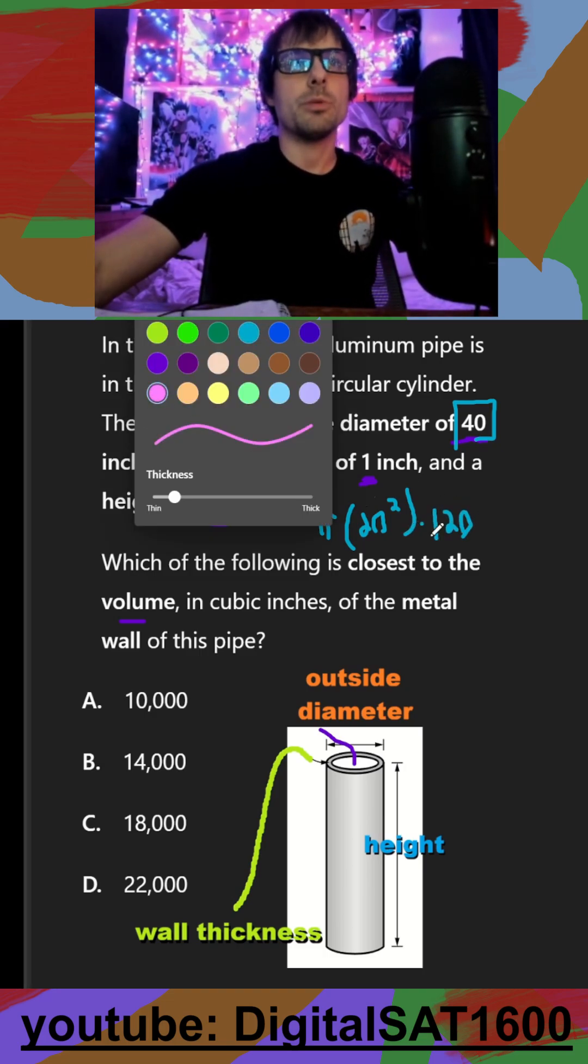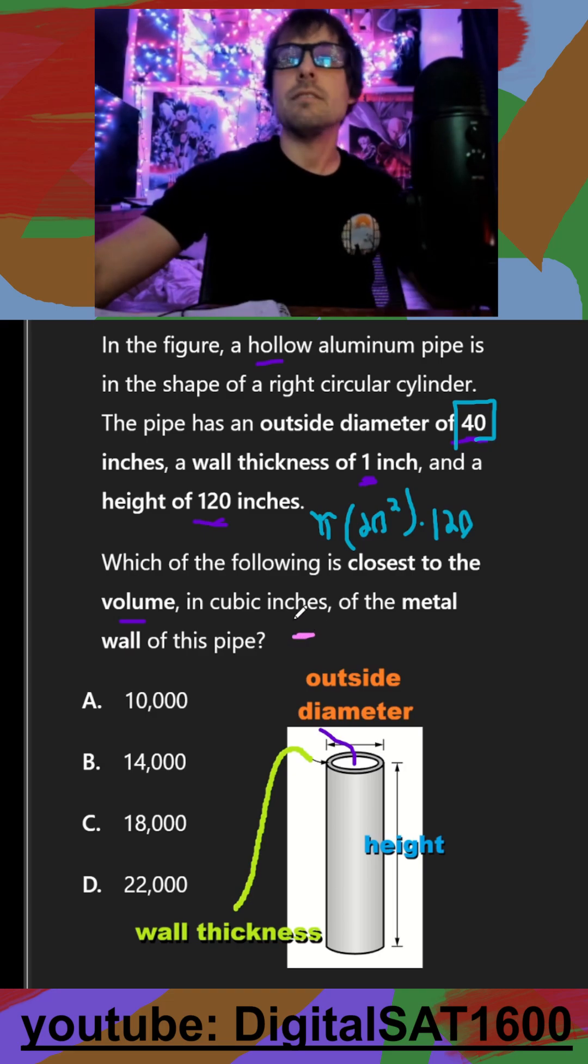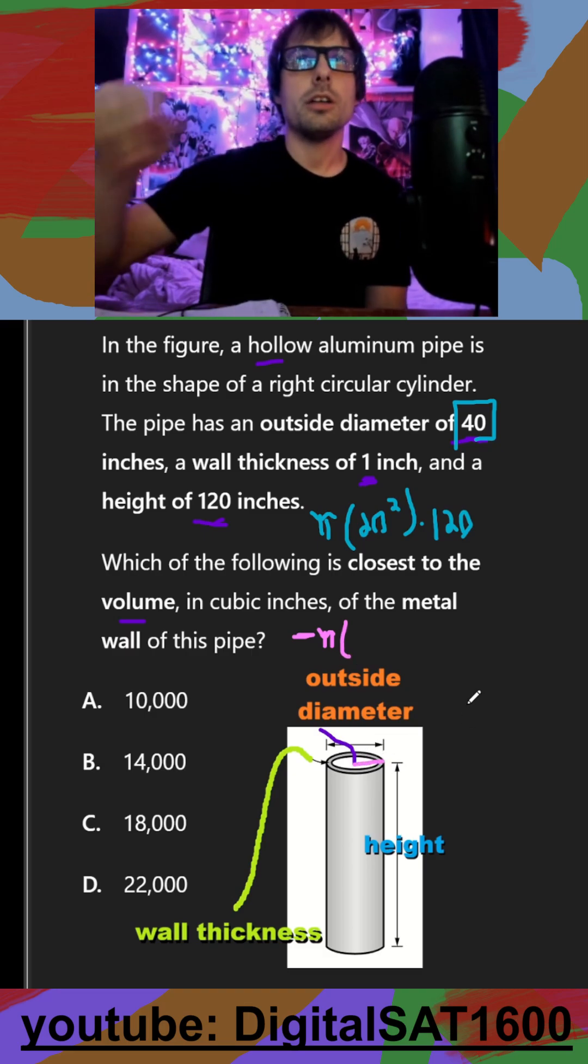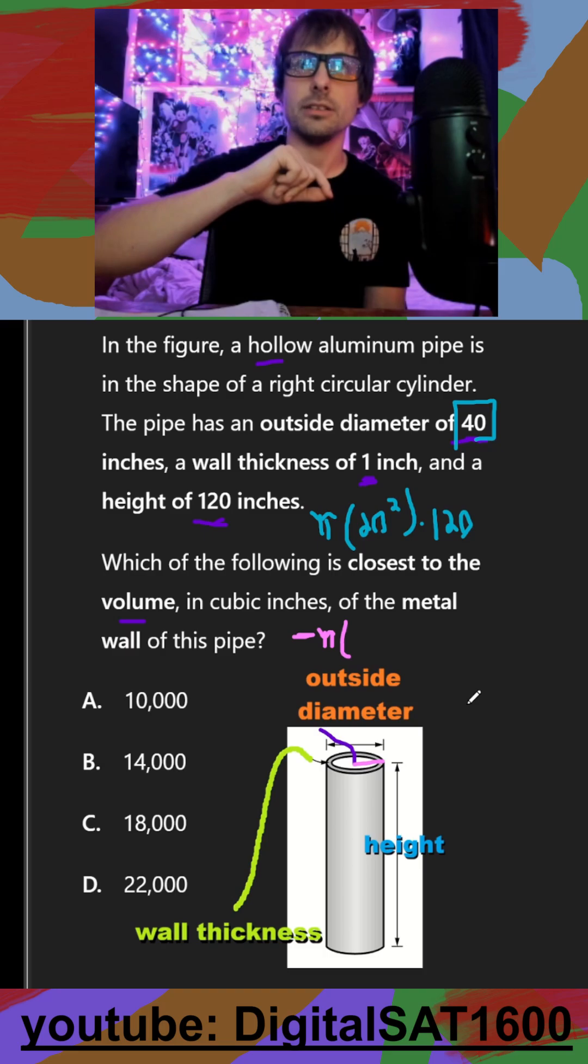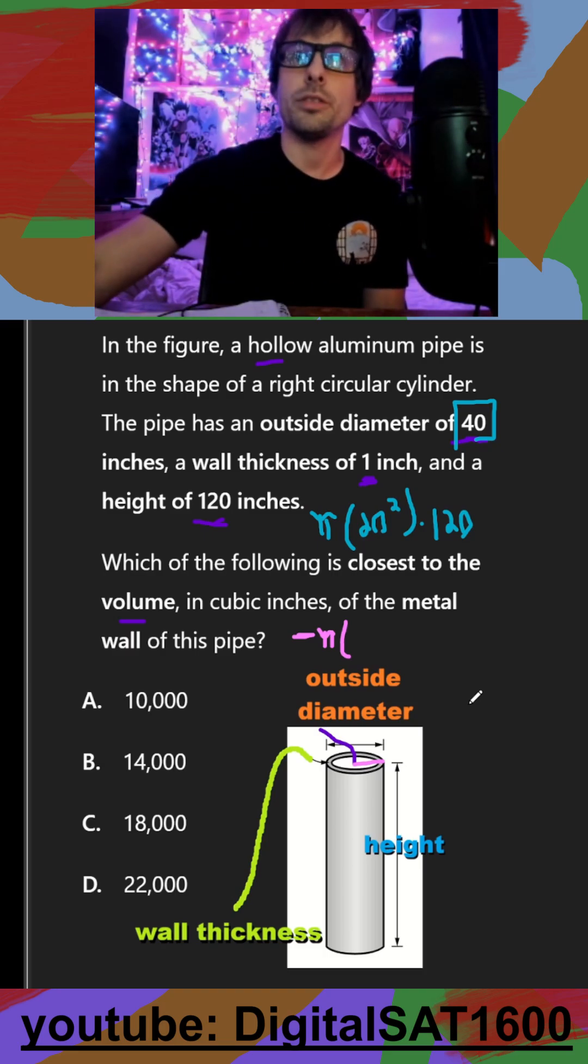And then what we want to do is subtract the volume of the smaller cylinder, the empty space. So that's just going to be pi. And then if the radius of the bigger cylinder is 20, to get the radius of the smaller cylinder, the empty space is just going to be minus the wall thickness, which is minus 1. So that's just going to be 19 squared times 120.